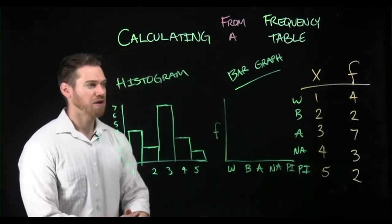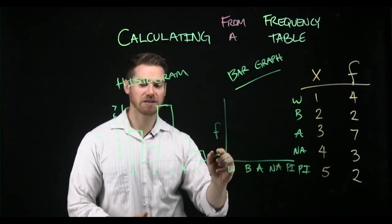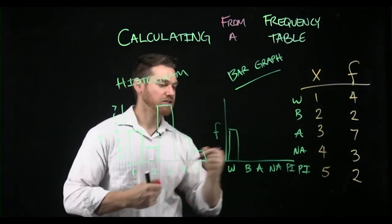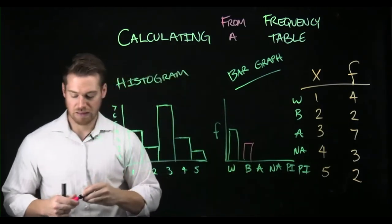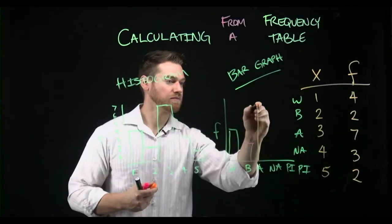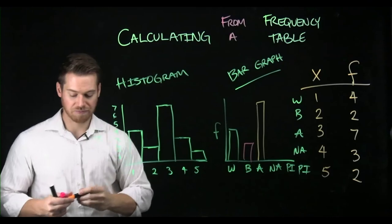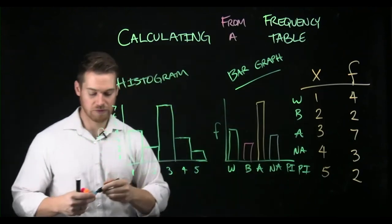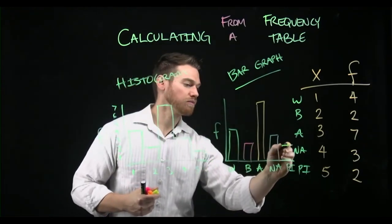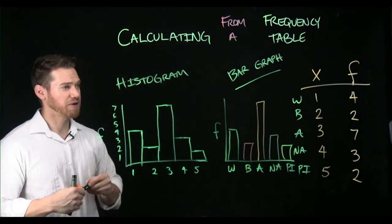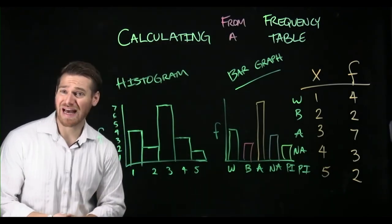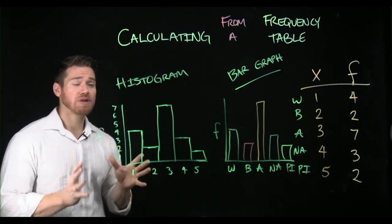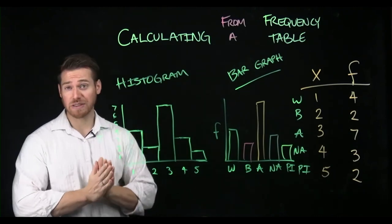We would still have frequency on our y-axis, and we wouldn't want these bars to touch. So if one category has a frequency of four, we'd draw that bar; if another is two, we'd draw that bar; seven, three, and two — with bars separated to indicate that these categories don't overlap. We're representing the frequency of discrete data. These are common things we'll do to graph the information we see in a frequency table.